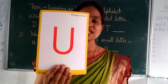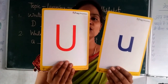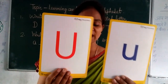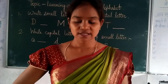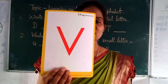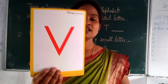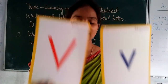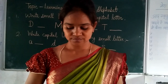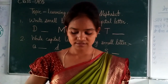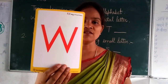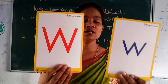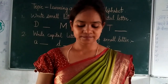Capital U. Small U. U for umbrella. Capital V. Small V. V for web. Capital W. Small W. W for watch.